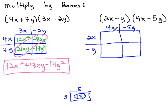In each box, we'll put the product of the headers. 4x times 2x is 8x squared. In the second box, 2x times negative 5y is negative 10xy. In the bottom left box, we have negative y times 4x is negative 4xy.